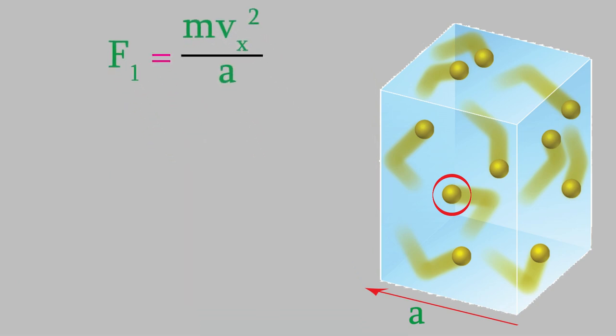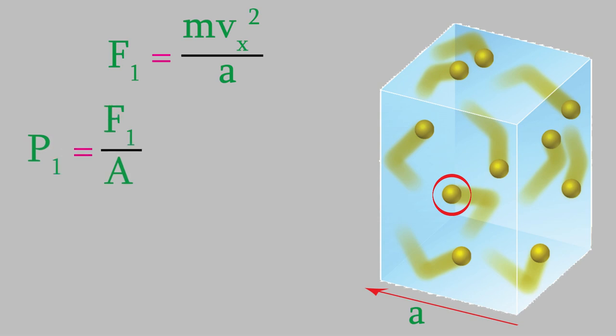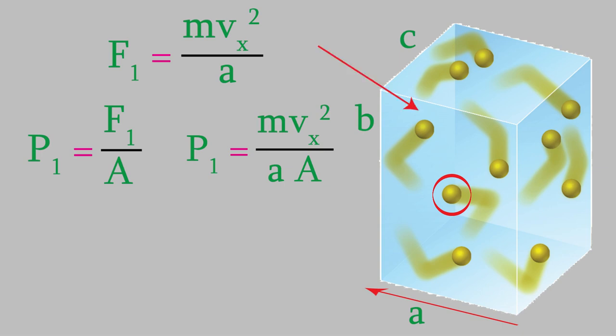Now, what does that tell us about pressure? Pressure equals force divided by surface area. So the pressure exerted by particle one on the back wall equals the force of the particle divided by the area of the wall. The force is mvx² over a. Suppose the dimensions of the box are a in the x direction and b and c in the other two dimensions — then the area of this wall is b times c.